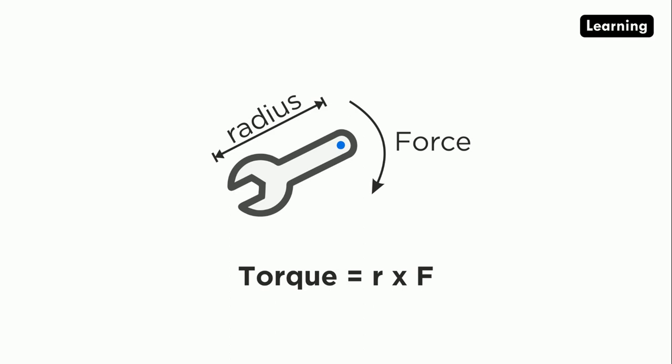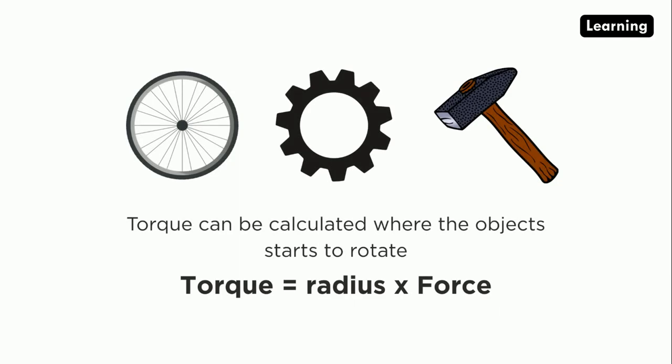We can see some other examples of rotary elements like wheels, gears, and hammers. All these objects are working by the torque principle. We can calculate the torque by using the radius and force. If we increase the radius, the torque will be huge. If we increase the force, then the torque will be huge.